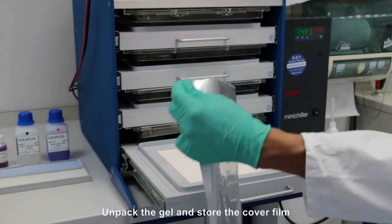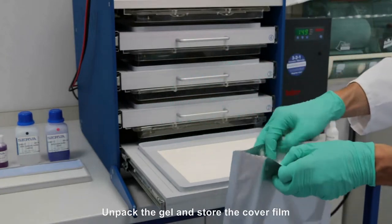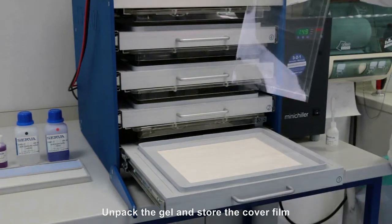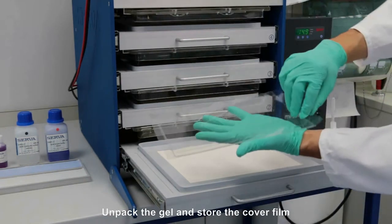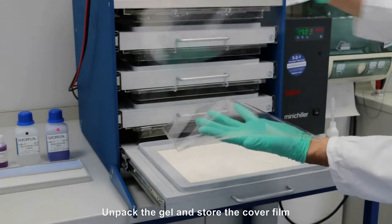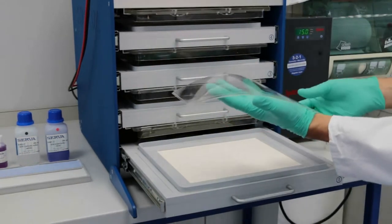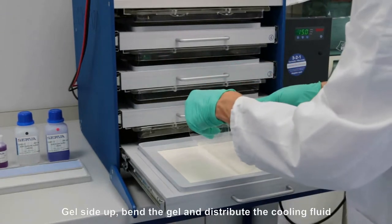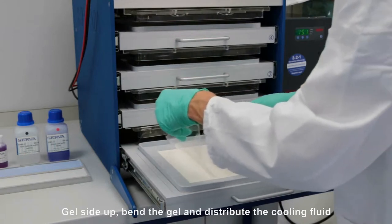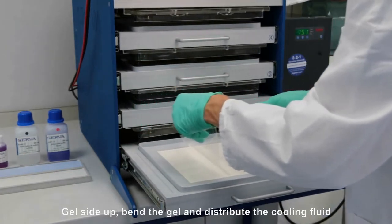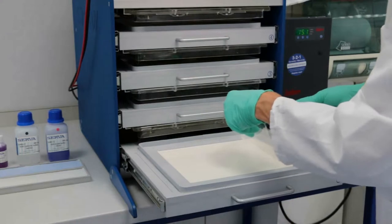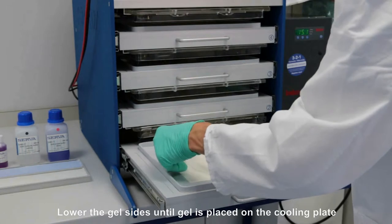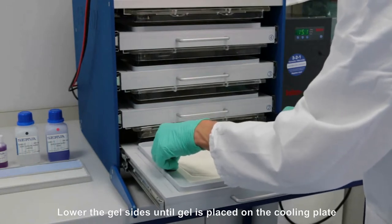Unpack the gel. For long term storage of the stained and dried gel, the cover film can be used, so don't throw it away. Gel side up and pre-casted slots towards yourself, bend the gel and distribute the cooling fluid. Lower the gel sides until the gel is placed correctly on the cooling plate. Avoid air bubbles.